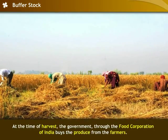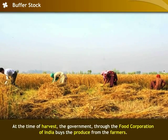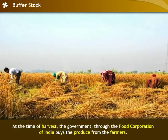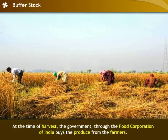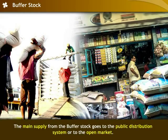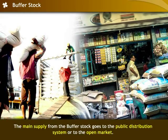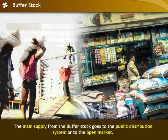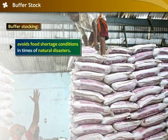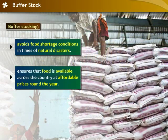At the time of harvest, the government, through the Food Corporation of India, buys the produce from the farmers. The main supply from the buffer stock goes to the public distribution system or to the open market. Buffer stocking helps avoid food shortage conditions in times of natural disasters, and also ensures that food is available across the country at affordable prices around the year.